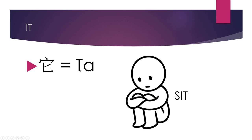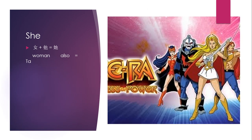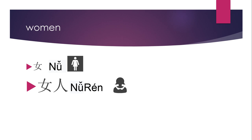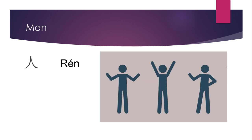Let me revise all five words we learned today. We learned 'it' — tā, by removing the 's' from 'sit.' We learned 'she' — the address for women. We learned 'he' — the address for men. We learned 'woman' — nǚ. We learned 'man' — rén.